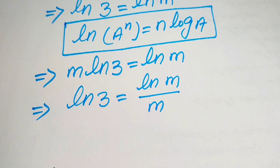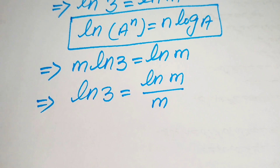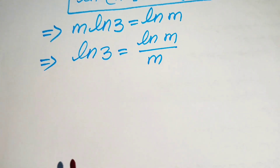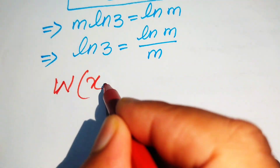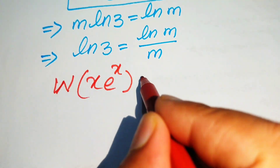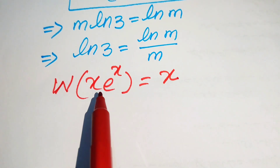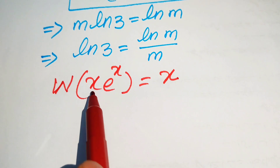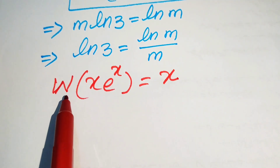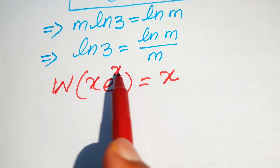Here we introduce the Lambert W function. The Lambert W function is defined as: W of x times e to the power of x equals x. This means that if you have the exponent of e multiplied by a term, this Lambert W function gives the output x.